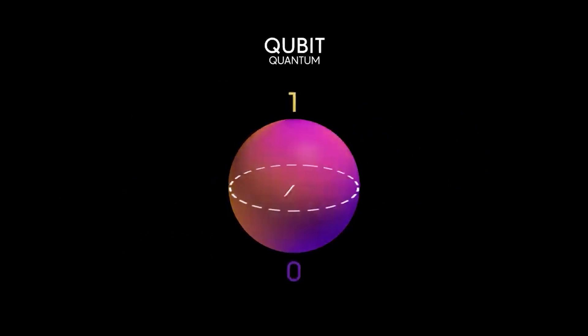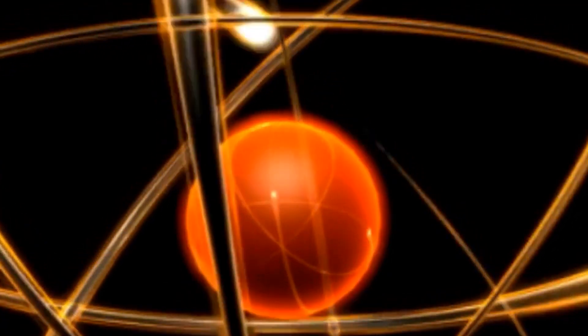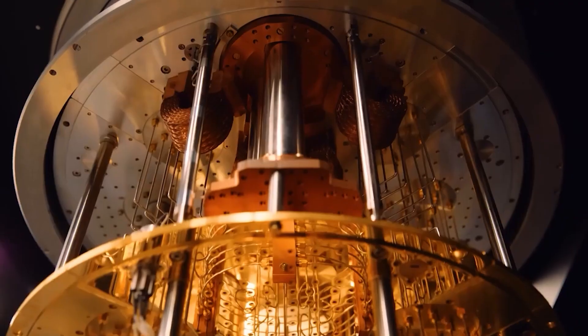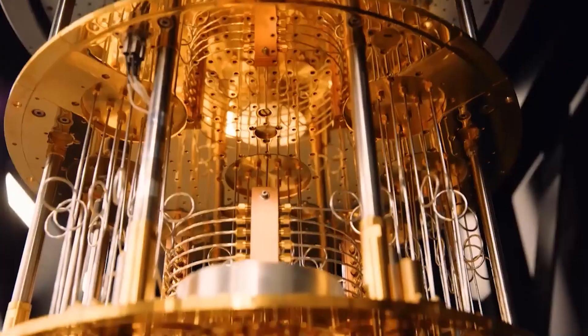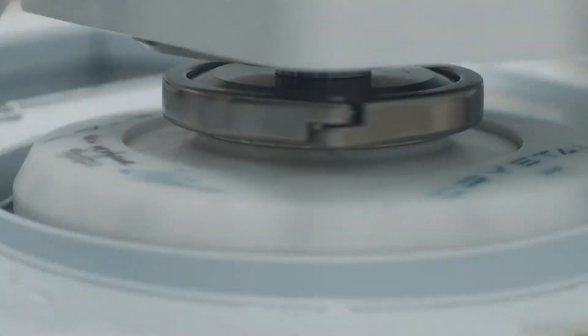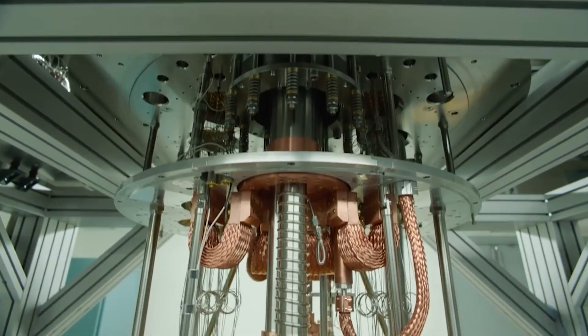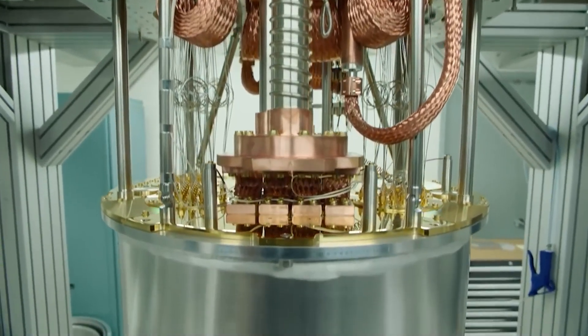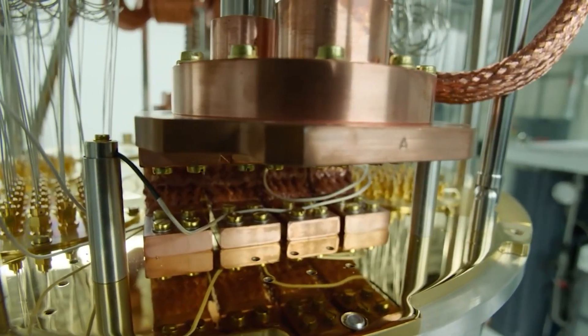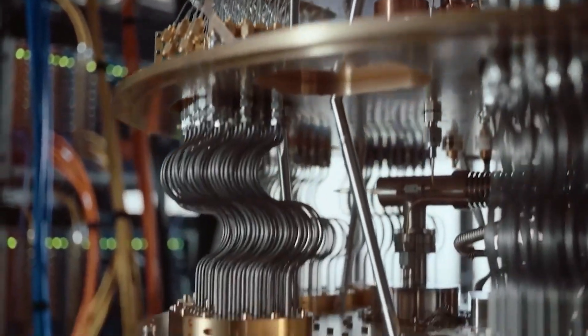To get qubits, scientists manipulate the spin state of protons or electrons. They can spin up and down or left and right. This is where we get the one and the zero. But in quantum mechanics, the qubit can exist in both states at the same time. In other words, they can be spinning in all directions at all times. This is why we say that smaller things operate according to different physical laws. And this is where things begin to get strange.